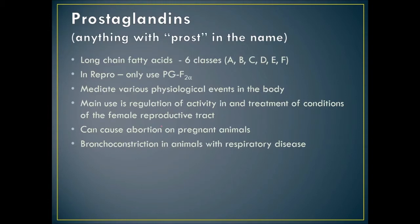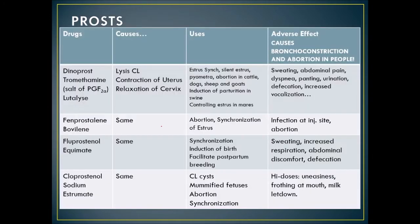Prostaglandin products include dinoprost — Lutalyse — fenprostalene, fluprostenol — Equimate — and cloprostenol sodium — Estrumate. These all cause lysis of the corpus luteum, contraction of the uterus, and relaxation of the cervix. Used for estrus synchronization, silent estrus, pyometra, abortion, parturition induction in swine, and corpus luteum cysts. Side effects include sweating, abdominal pain, dyspnea, panting, urination, defecation, and increased vocalization. Anyone using it must not be pregnant and must not have asthma.